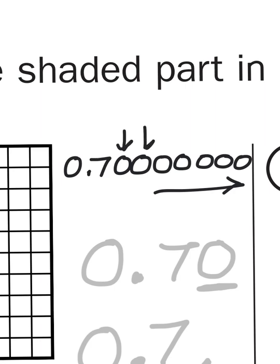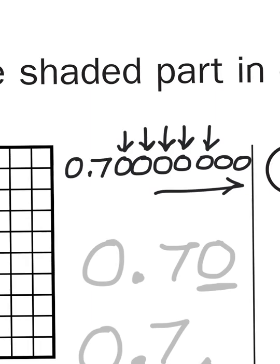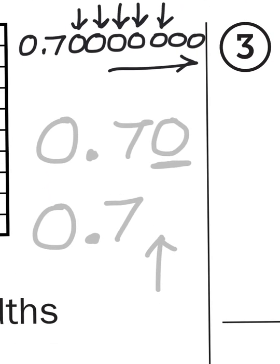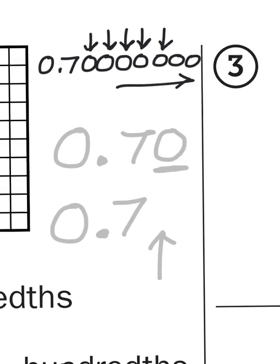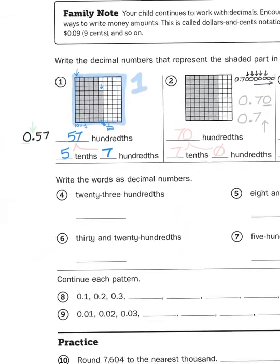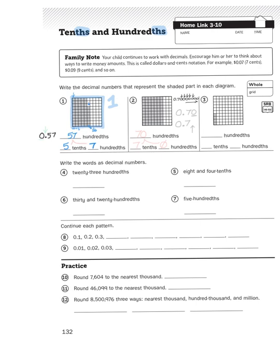Technically, 0.7 could be represented as 0.7000000... and so on, going on infinitely to the right. There are no hundredths, no thousandths, no ten-thousandths, no hundred-thousandths, no millionths. Yes, you can divide something into a million parts and have a millionth as a fraction. The fact that there is nothing listed behind the seven means the assumption is there are no further smaller parts.